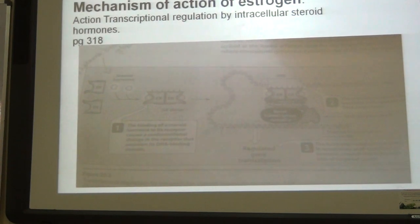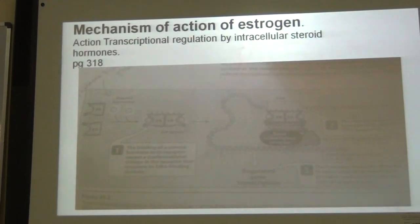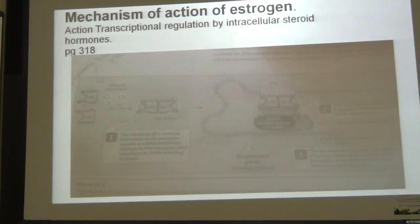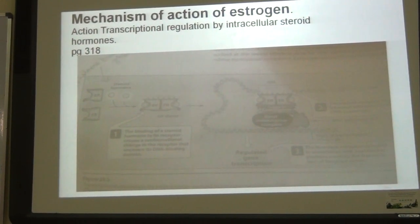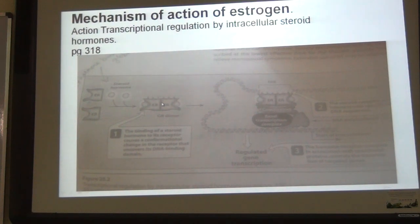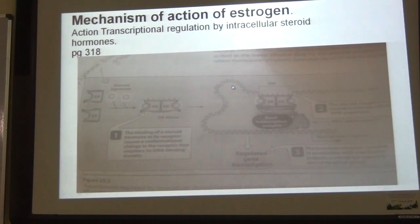The diagram explains how estrogen produces its mechanism of action. Hormones are present in plasma in the form of sex hormone binding protein. When it reaches the target cell, it dissociates into free hormone. These hormones then diffuse across the cell membrane and bind to specific nuclear receptors in target cells, forming a steroid-receptor complex. This uncovers the DNA binding domain, and the complex then binds to DNA and stimulates synthesis of specific RNAs and proteins, which then produce physiological functions.